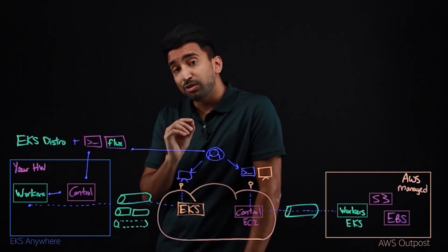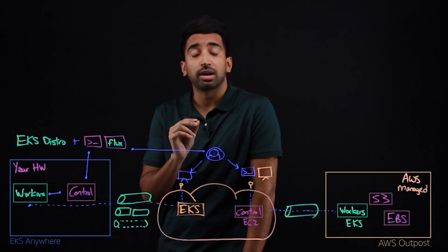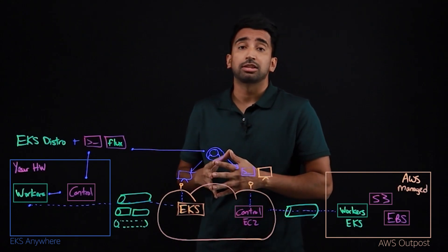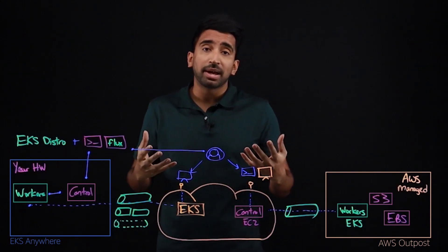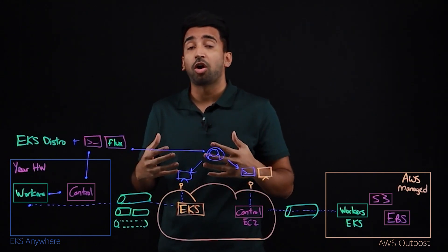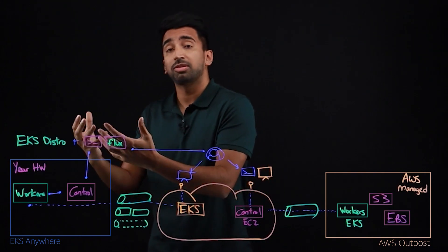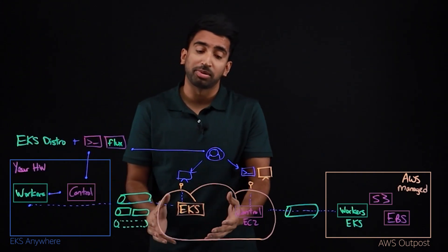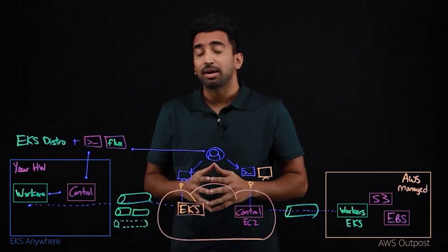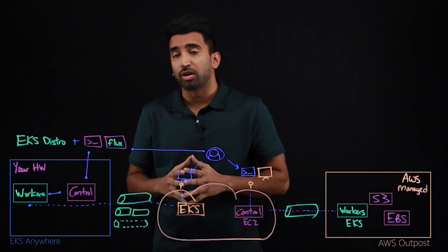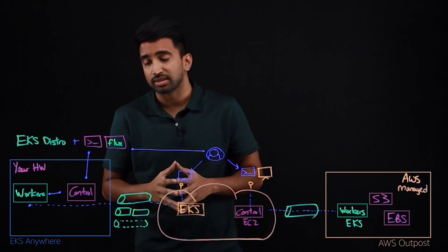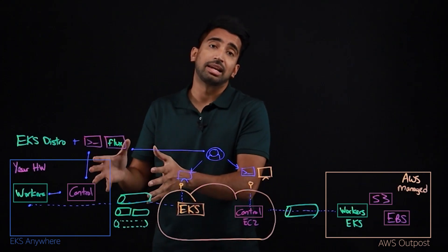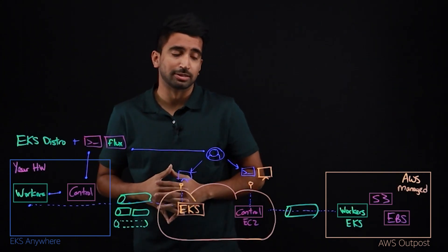In the future, we're looking to add more interesting support, things like support for App Mesh, or routing all of your logs from your applications into a central place running on AWS. I'm really excited for the future of EKS Connector and what it enables for EKS Anywhere deployments.